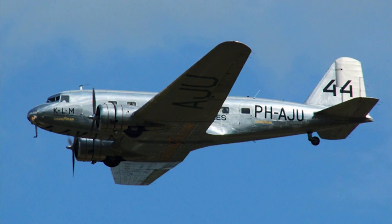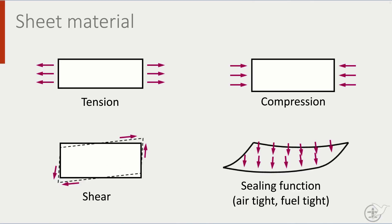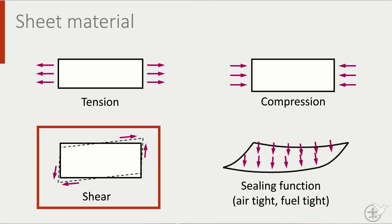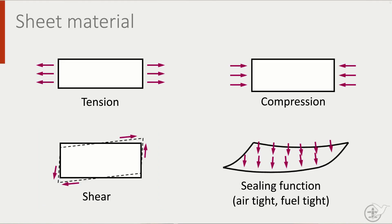As aircraft design evolved, a shift occurred from fabric-covered trusses to metal sheets which had load-bearing capability. The advantage is that sheet material can also carry shear, whereas the diagonal rod or wire can only perform its function in tension or compression.